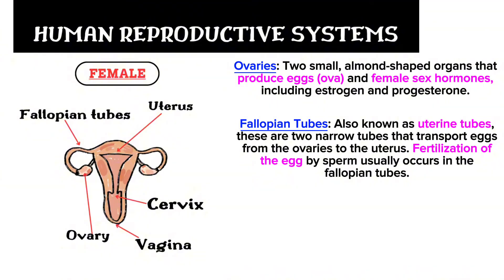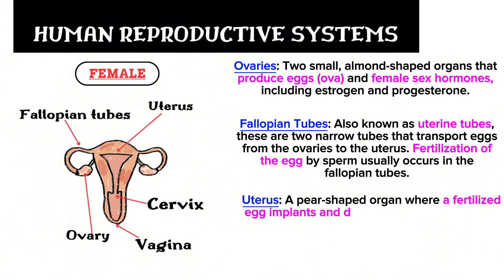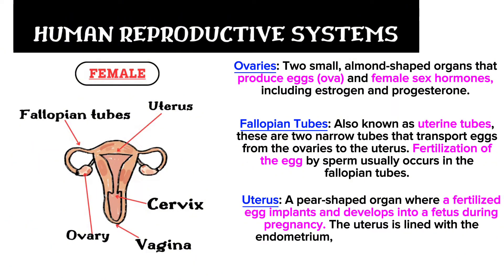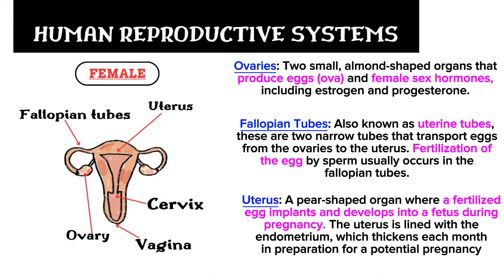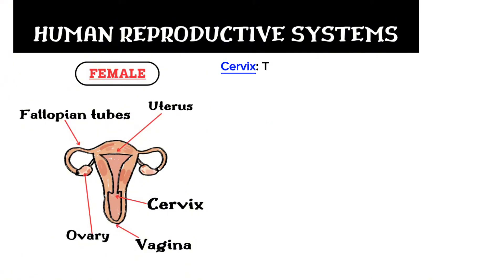Next we move to the uterus. It is a pear-shaped organ where a fertilized egg implants and develops into a fetus during pregnancy. The uterus is lined with the endometrium, which thickens each month in preparation for a potential pregnancy and sheds during menstruation if pregnancy does not occur.